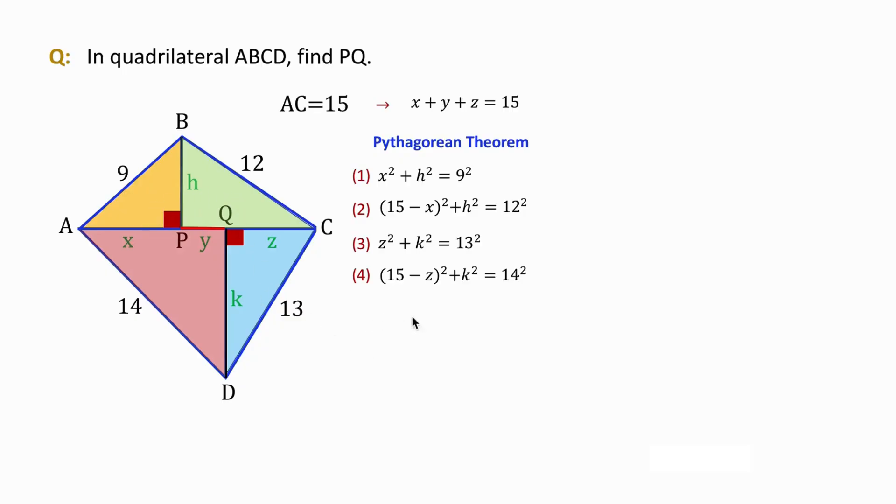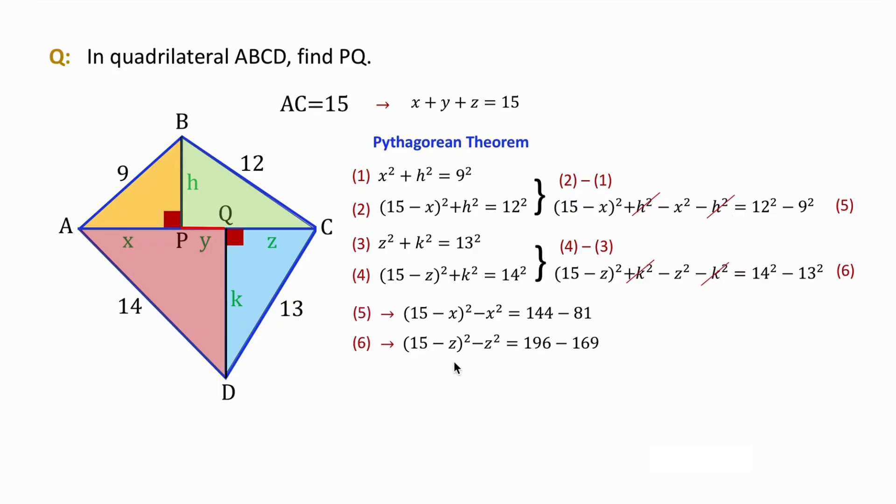Now we subtract equation 1 from 2. Also, we subtract equation 3 from 4 to get equations 5 and 6. Now we can eliminate H squared and K squared to get these new equations. If we expand the first term using this identity, we get two new equations.